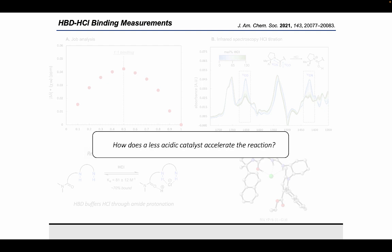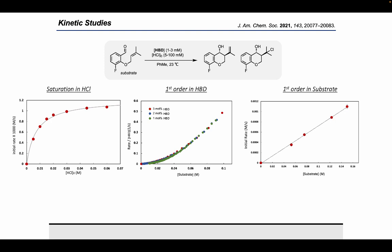To answer this question, we began by performing kinetic studies with the goal of defining the rate law for the reaction so that we could identify the rate limiting step. Consistent with a kinetically relevant binding interaction between hydrogen chloride and the H-bond donor catalyst, we observed saturation behavior when plotting the initial rate of the reaction against the concentration of HCl while keeping the concentrations of all other components fixed. Beyond this, we identified that the reaction exhibits a positive first-order dependence on the concentration of H-bond donor.